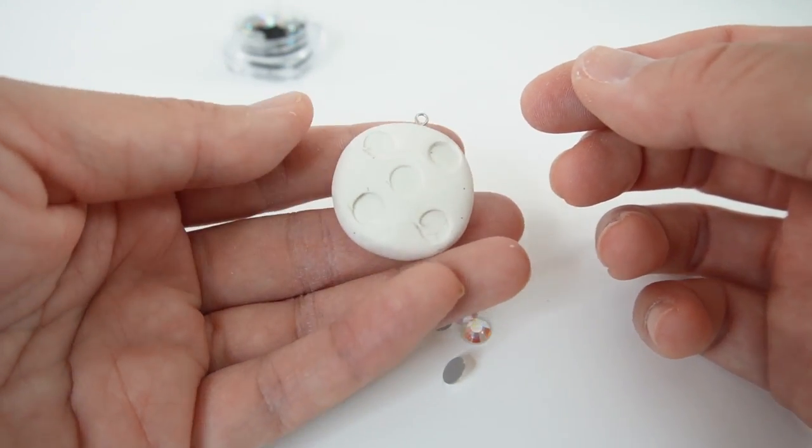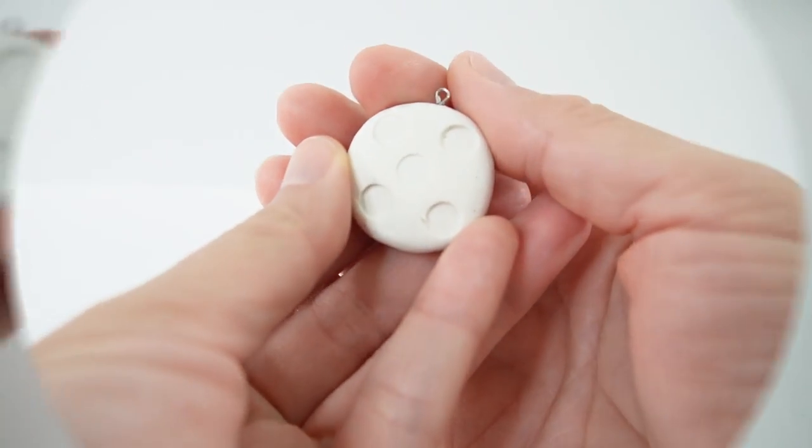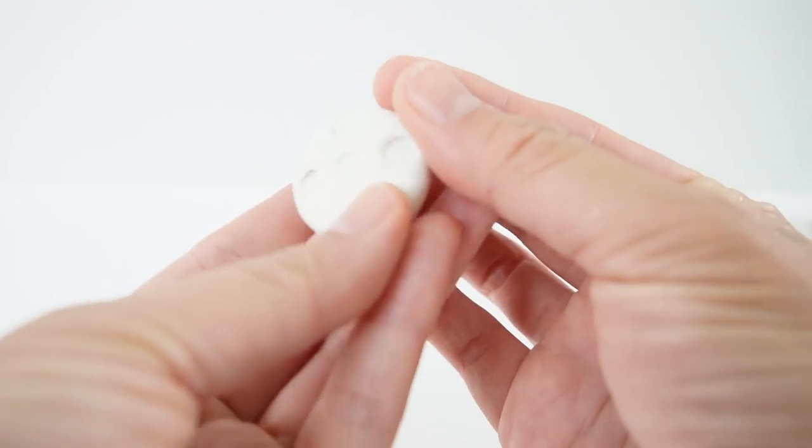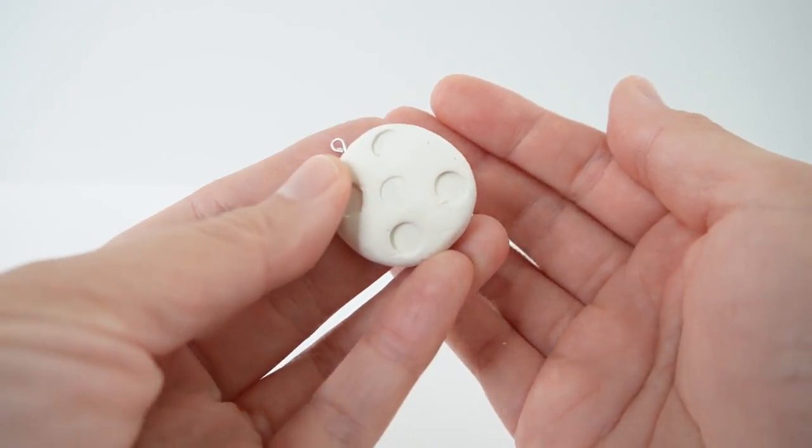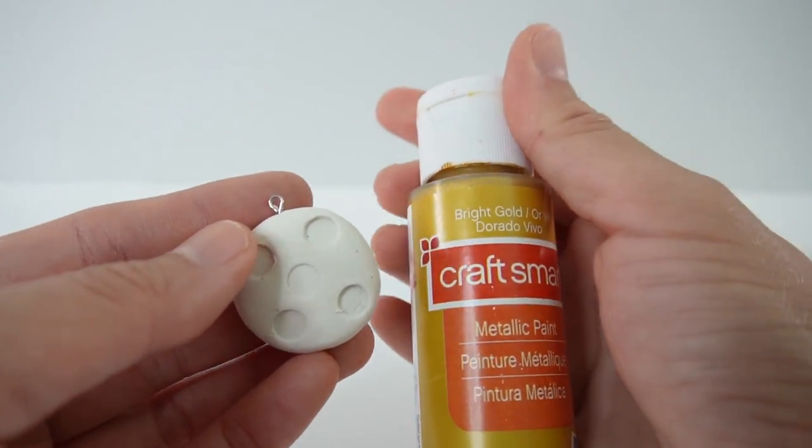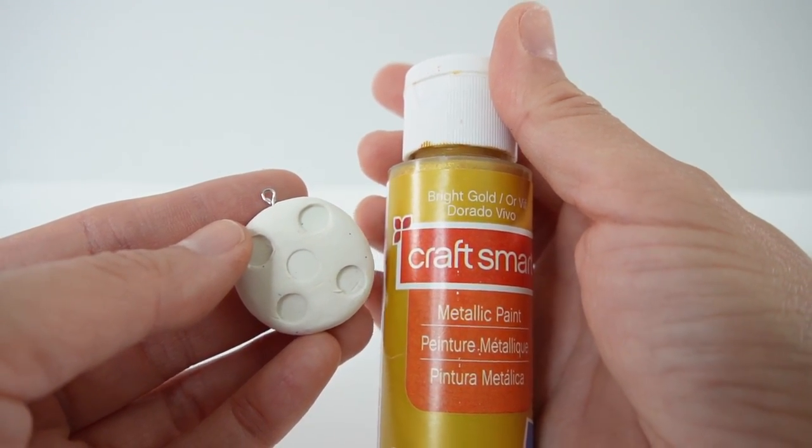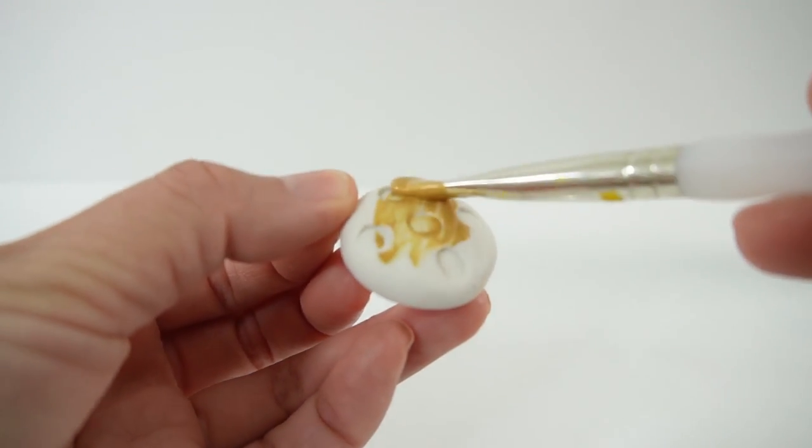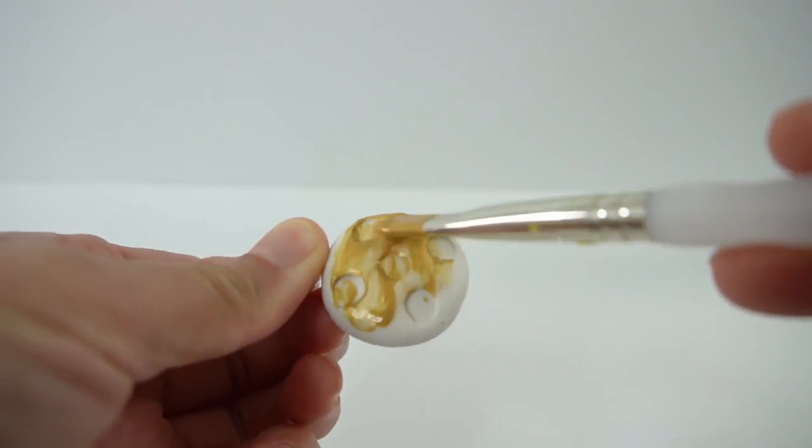I'm going to bake it according to instructions on the box. After baking, this is what the charm looks like so far. So now we can start painting. I'm going to paint the entire charm bright gold. This gold is a little thin, so we're going to give it a few coats.